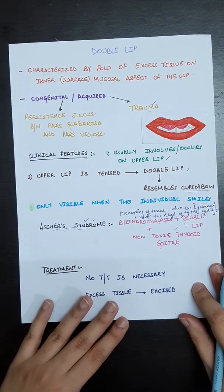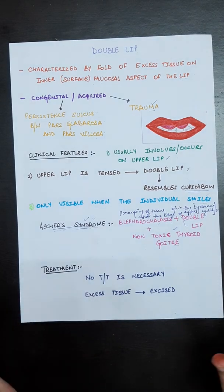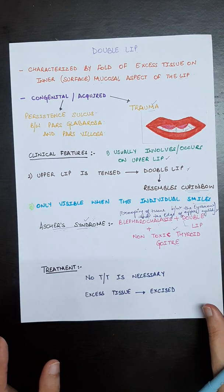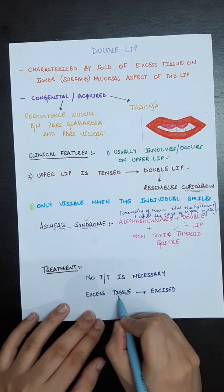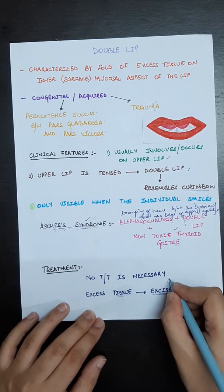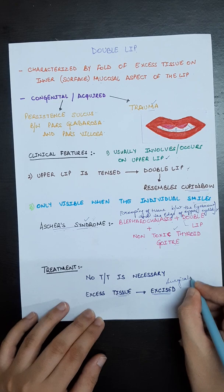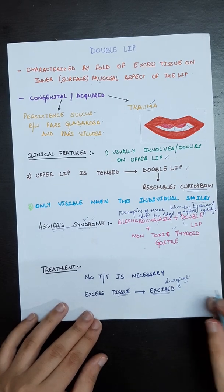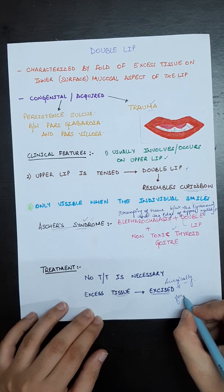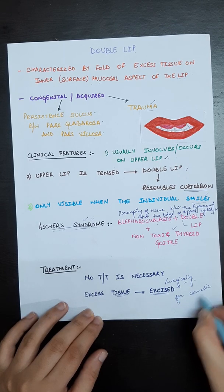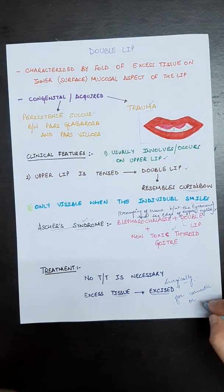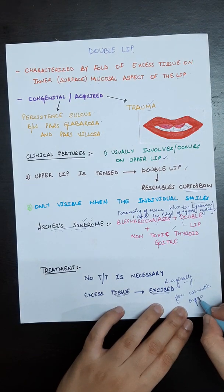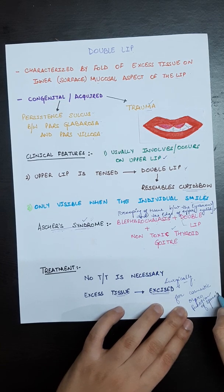The treatment of double lip: no treatment is required unless it is irritating. If needed, we should excise the excess tissue surgically. Surgical excision should be done for cosmetic purposes or for function of speech and mastication.